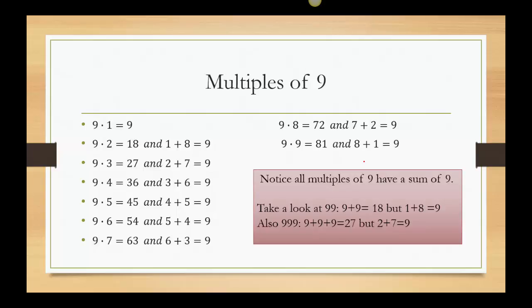So use that even for a bigger number. Let's say I pick something like 99, which is 9 times 11. 9 plus 9 is 18. But go a little farther, 1 and 8 is 9. So we always want to go down until a single digit when we do these answers. Even if I had 999. 9 times 111. 9 plus 9 plus 9 is 27. 2 and 7 is 9. So this continues to work no matter how big the number becomes.